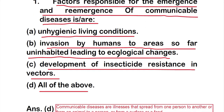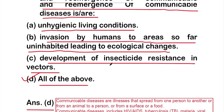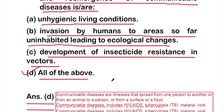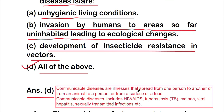The right answer is option D: all of the above are factors responsible for emergence and re-emergence of communicable disease. Communicable diseases are illnesses that spread from one person to another, from an animal to a person, or from a surface or food. Examples include HIV/AIDS, tuberculosis, malaria, viral hepatitis, and sexually transmitted diseases.